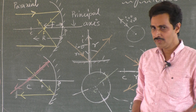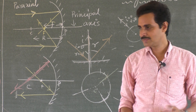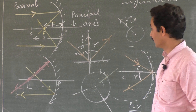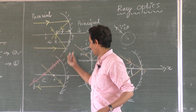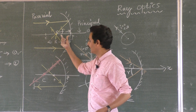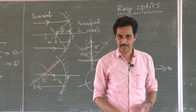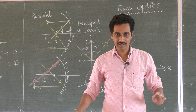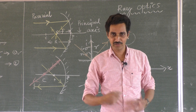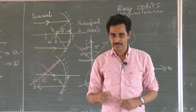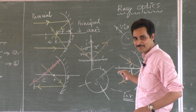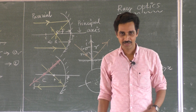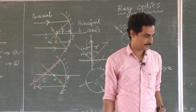In the same way we have to discuss the convex mirror, and then see how images are formed, what is the relation between radius and focal length, and one-by-one derivations. These are the basic things. We will discuss the convex mirror later. Thank you.